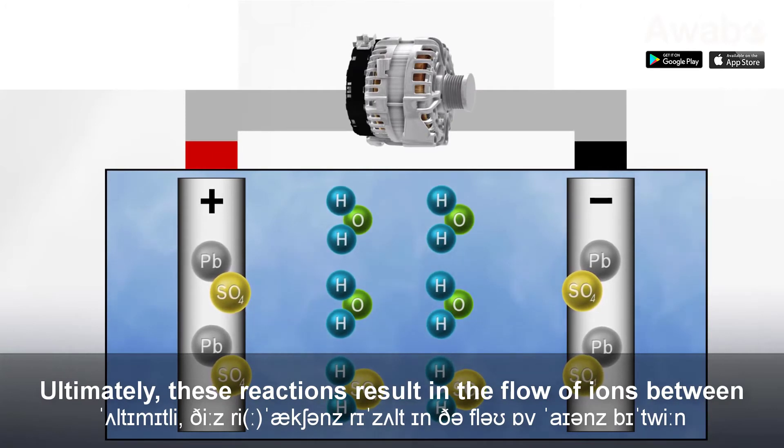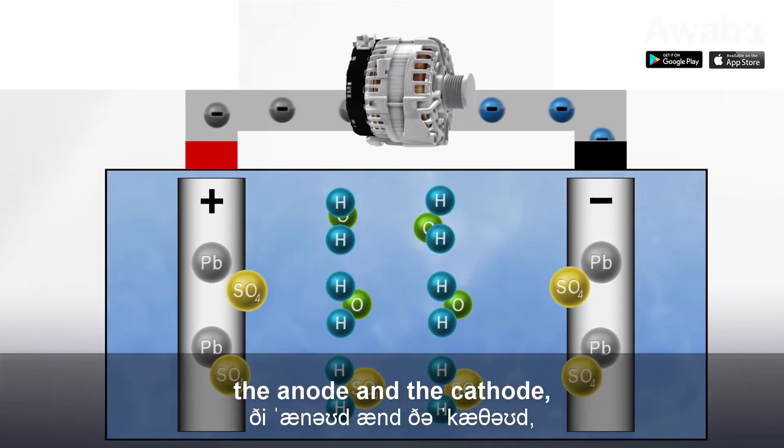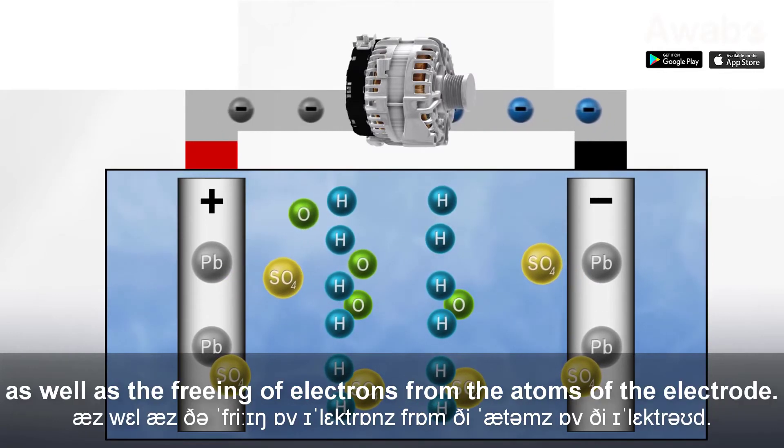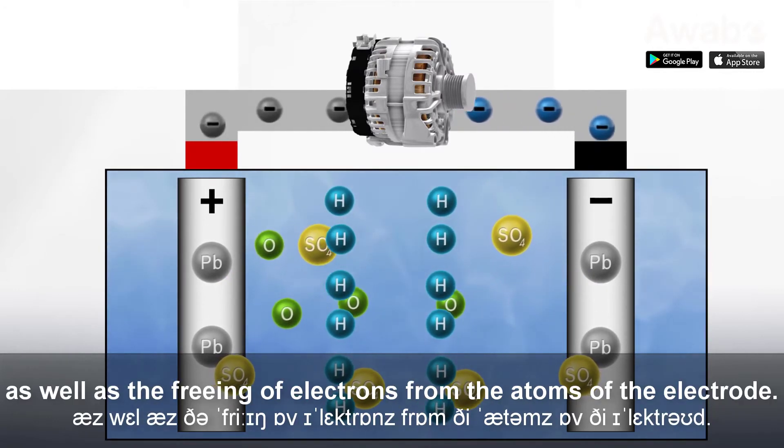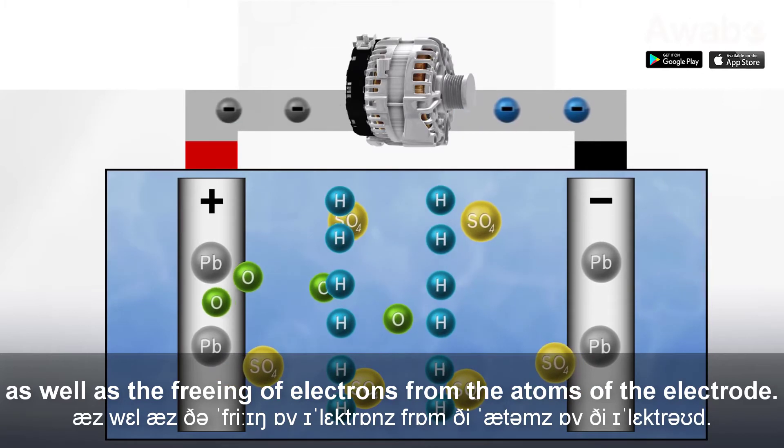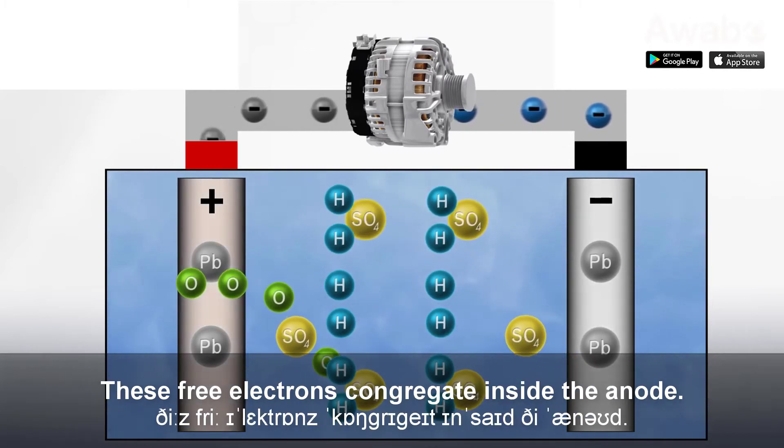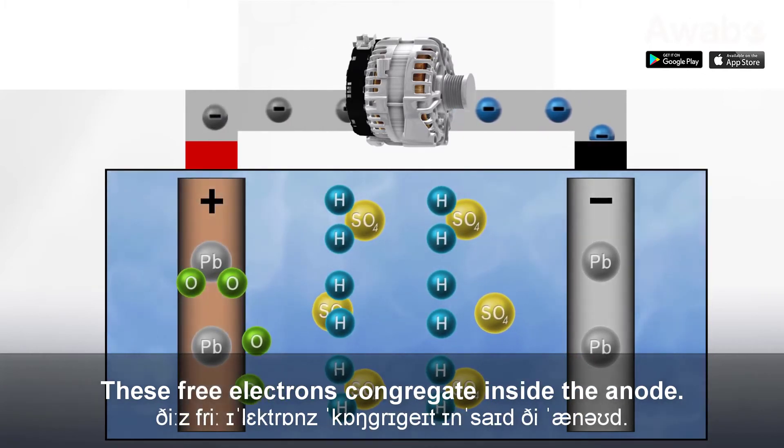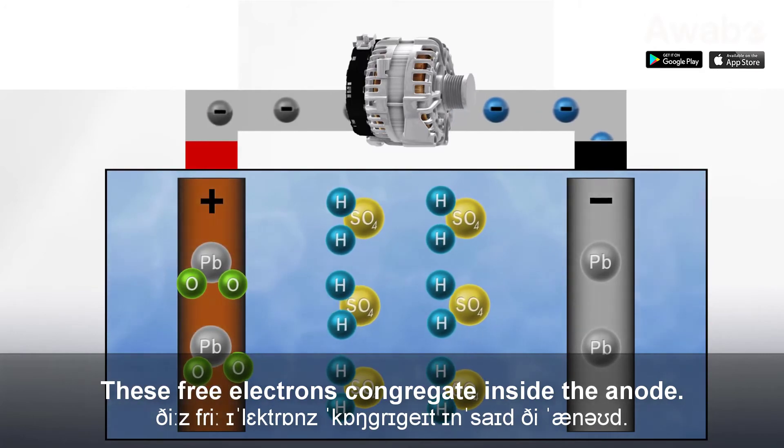Ultimately, these reactions result in the flow of ions between the anode and the cathode, as well as the freeing of electrons from the atoms of the electrode. These free electrons congregate inside the anode.